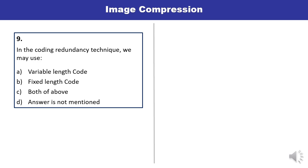Question 9: In coding redundancy technique, we may use — variable length code, fixed length code, both of the above, or answer not listed? In coding redundancy technique, we may use variable length code as well as fixed length code. The answer is C.